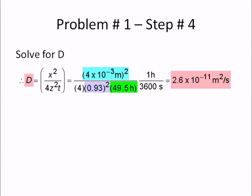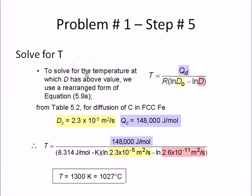Now we're looking for time, not for the diffusion constant. So what we need to do next is solve for T. To solve for the temperature at which D has the above value, we're going to use the rearranged form from our textbook, the Callister textbook. T equals the activation energy Q_d over R times natural log of D naught minus natural log of D.